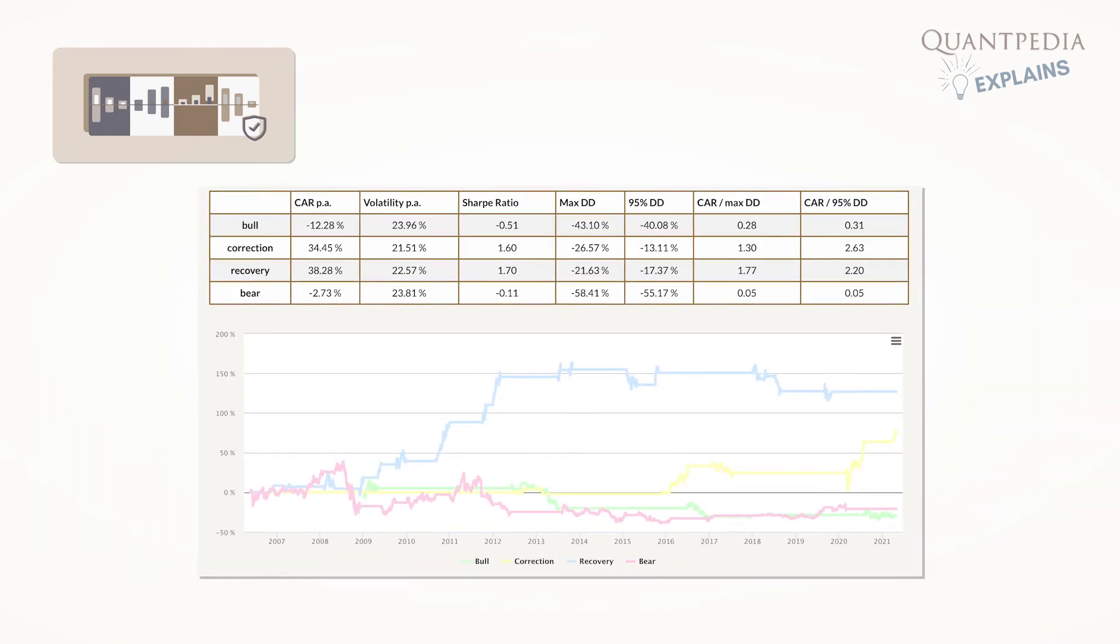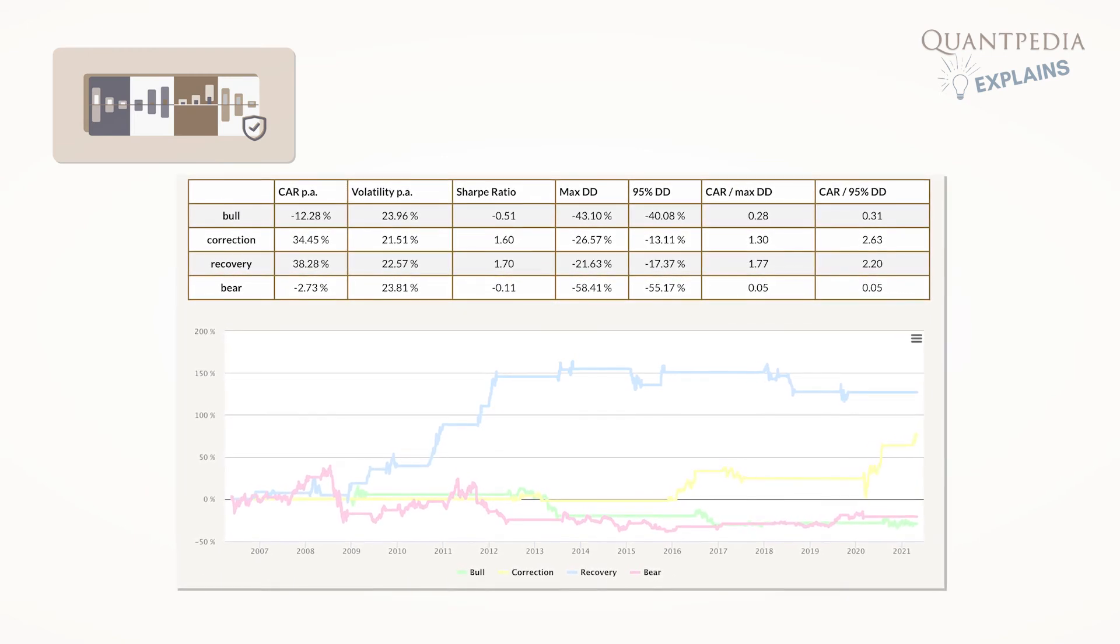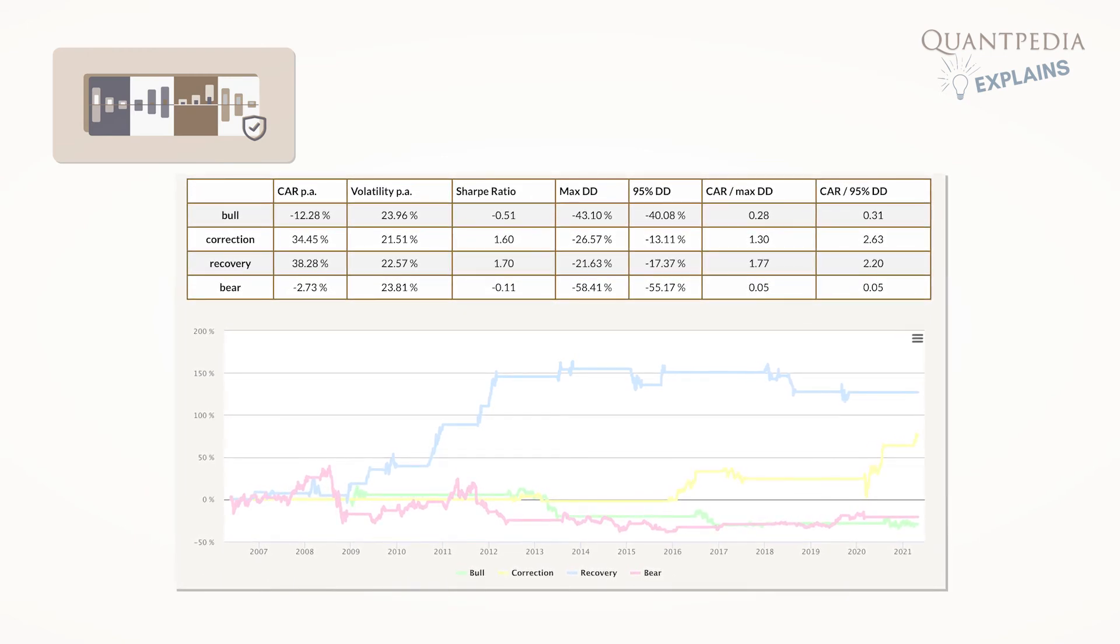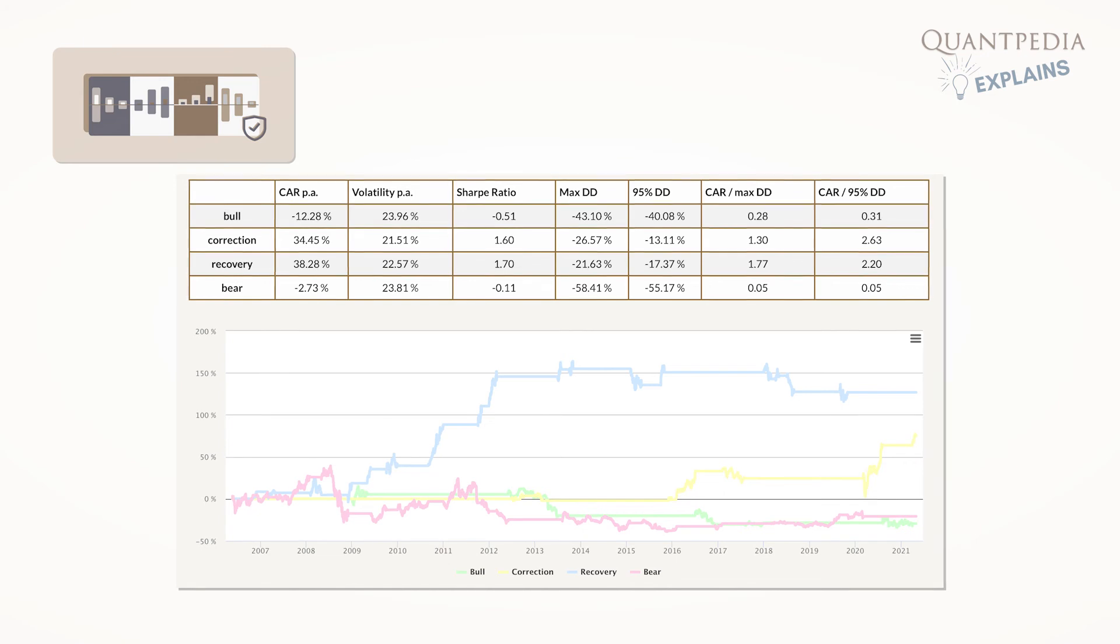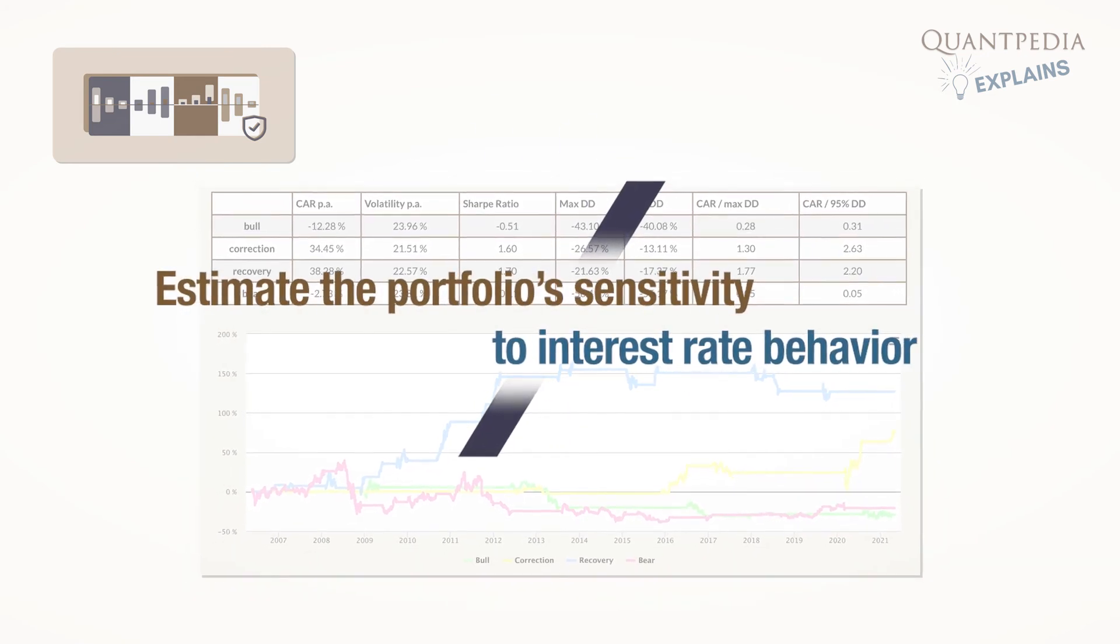Additionally, users can also review the performance table and equity curves of four different trading strategies that would hold a model portfolio only during individual fixed-income market phases. This helps to estimate their model portfolio's sensitivity to interest rate behavior.